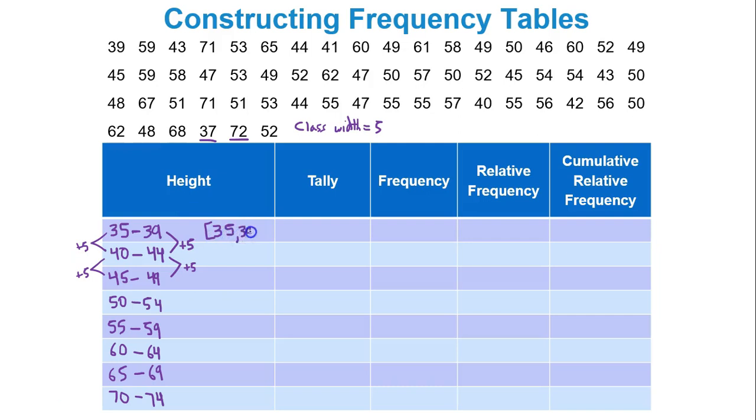You could also write your classes in interval notation which is how your homework likes work to be done. You could write 35 comma 39 bracket. You could write 40 comma 44 bracket. 45 comma 49 bracket. 50 comma 54 bracket. And so forth. So your homework really wants you to use the bracket notation, the interval notation here.